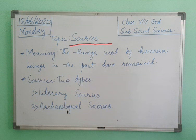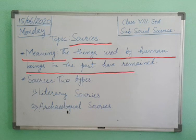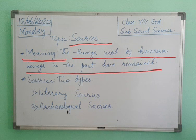First, we have to see what sources are. Sources are the basic material which is required for the construction of history. The things used by human beings in the past that have remained are called sources. It may be agricultural tools left by early peoples, forts, coins, inscriptions, temples, and other religious places.